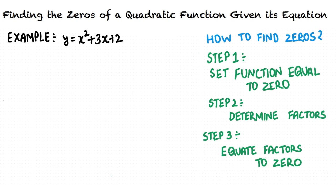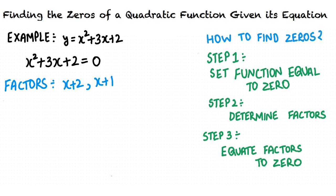Let us take an example. We are required to find the zeros of the quadratic function y equals x squared plus 3x plus 2. The first step is to equate the function to zero, giving us x squared plus 3x plus 2 equals zero. The next step is to determine the factors. The factors are x plus 2 and x plus 1, so the expression becomes x plus 2 times x plus 1.